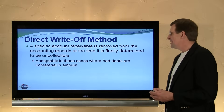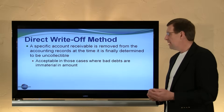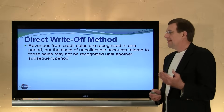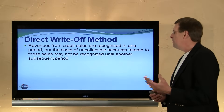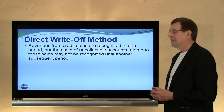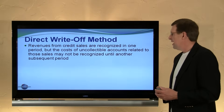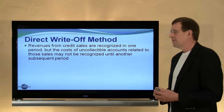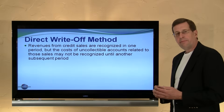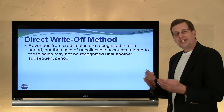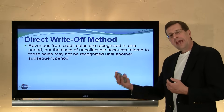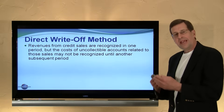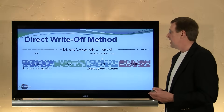The direct write-off method is acceptable in those cases where bad debts are not material in amount. It's also to be used for tax purposes. However, with this method, revenues from credit sales are recognized in one period, but the cost of the uncollectible accounts related to these sales may not be recognized until a subsequent period. So we have a problem with the direct write-off method from a conceptual or GAAP point of view — good matching is not achieved. It's better if we can have the expense recorded in the same time period as the sale.